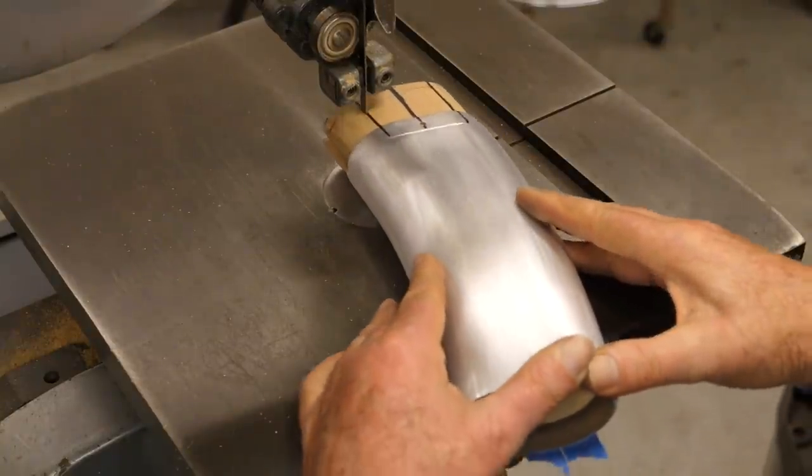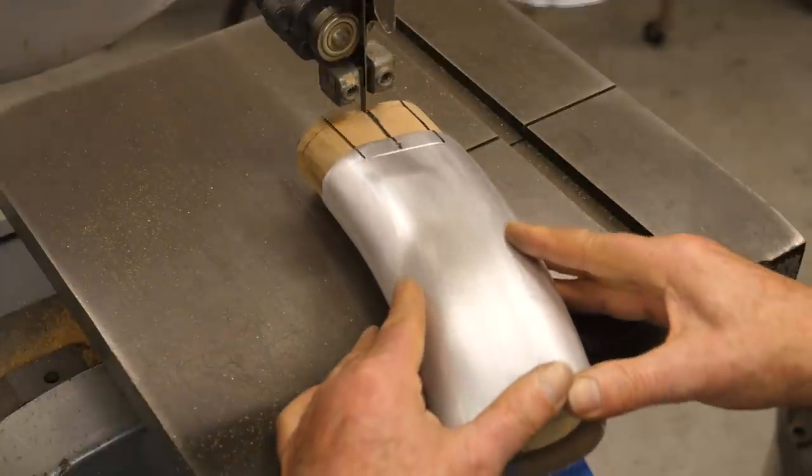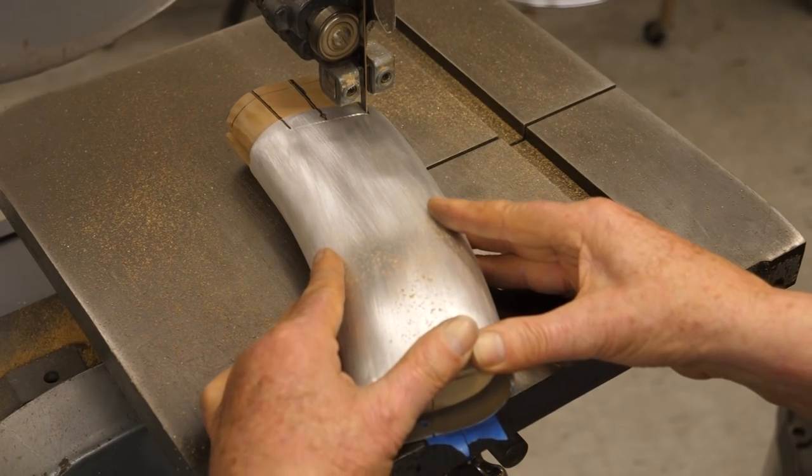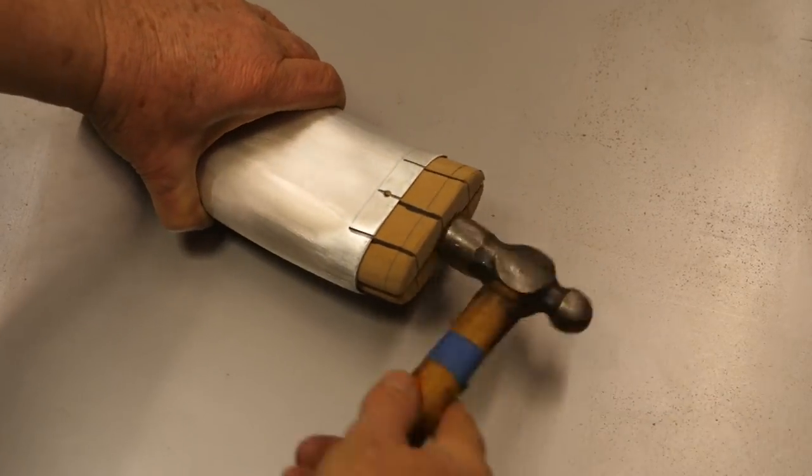The wooden slug is slid forward, allowing me to cut grooves for removing the waste. Now the slug is tapped back into place.